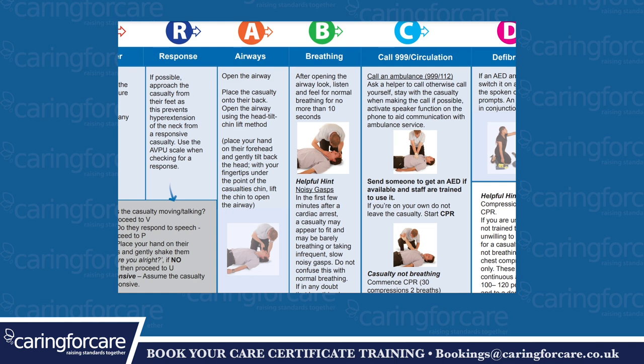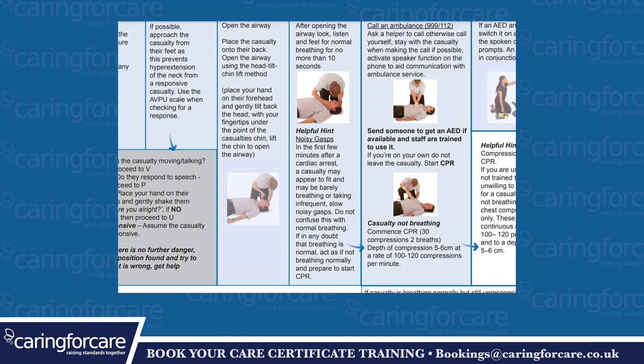Use the AVPU scale when checking the response. A - Alert: Is the casualty moving or talking? No? Proceed to V. V - Voice: Do they respond to speech? No? Proceed to P. P - Place: Place your hand on their shoulders and gently shake them asking, are you okay? Are you alright? If no response, proceed to U. U - Unresponsive: Assume the casualty is unresponsive. Provided there is no further danger, leave in the position found and try to find out what is wrong. Get help if needed.